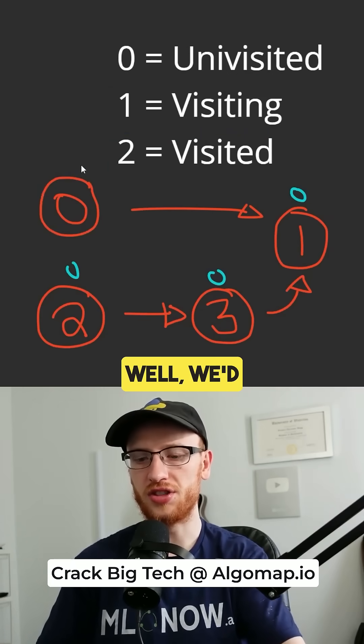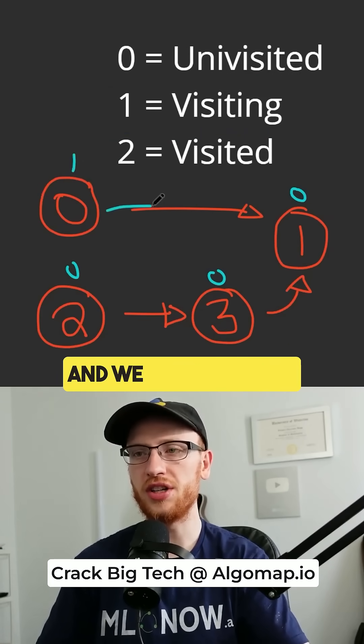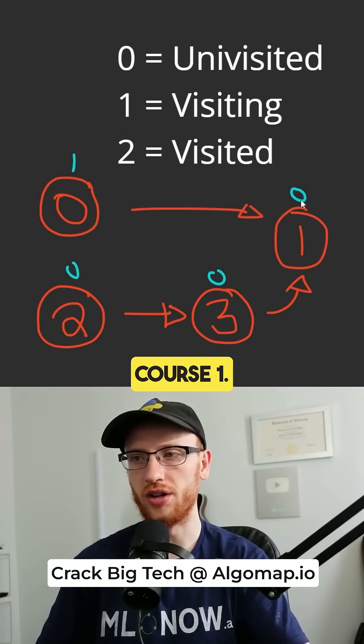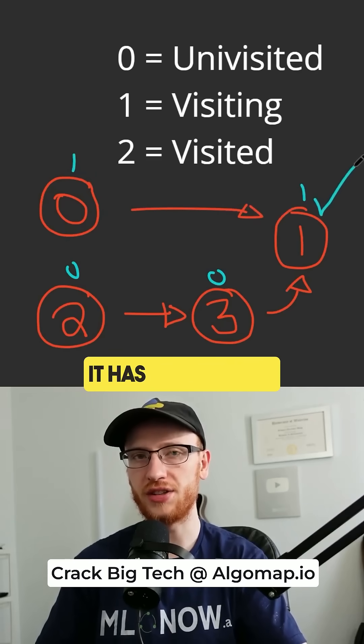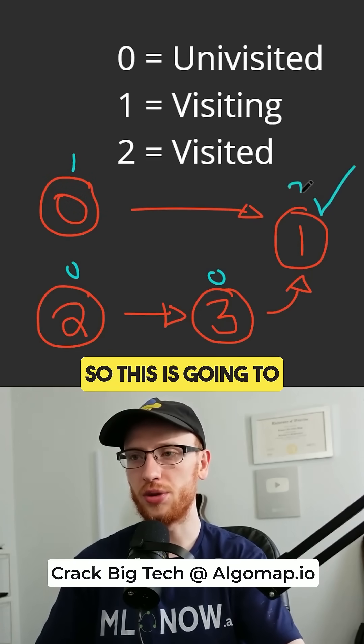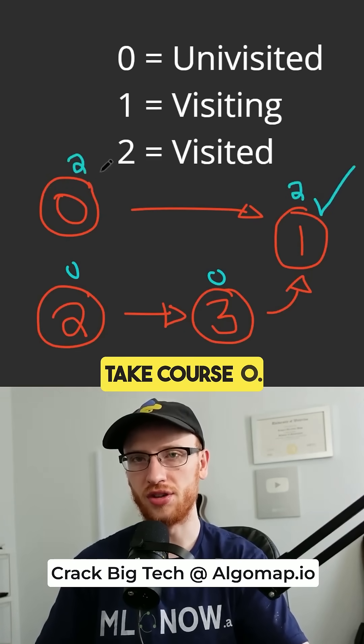So let's see if we can take course 0. Well, we'd start that as visiting, and we can take that if we can take course 1. Well, yes, we can take that because it has no prereqs. So this is going to switch to a 2, and that means we can also take course 0.